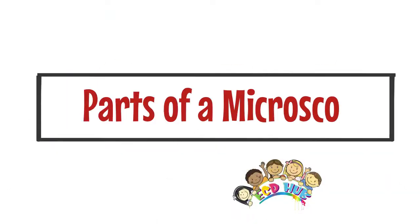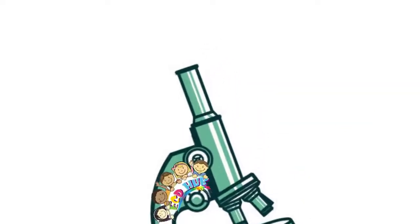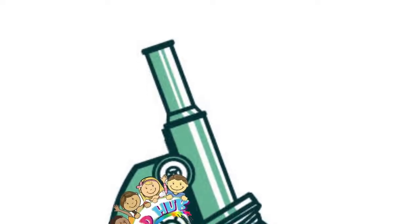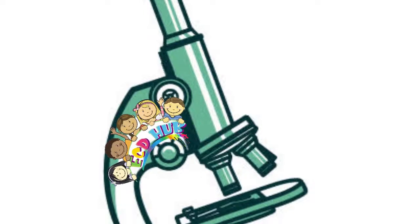The parts of the microscope. The three basic structural components of a compound microscope are the head, base, and arm. The base of the microscope supports the microscope and houses the illuminator. The arm connects to the base and supports the microscope head.